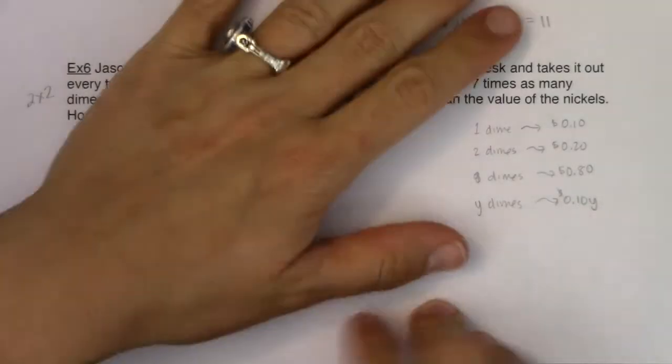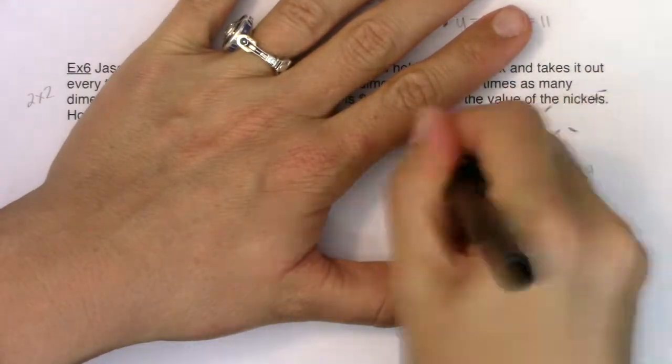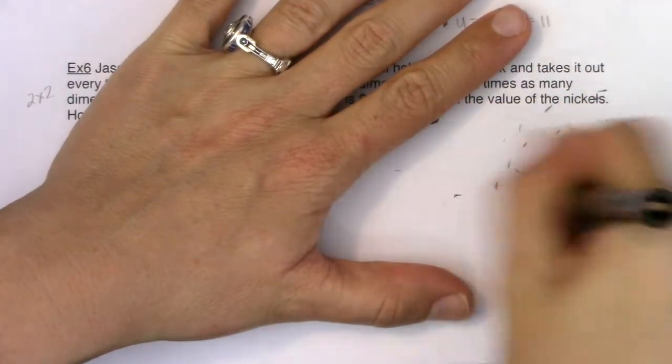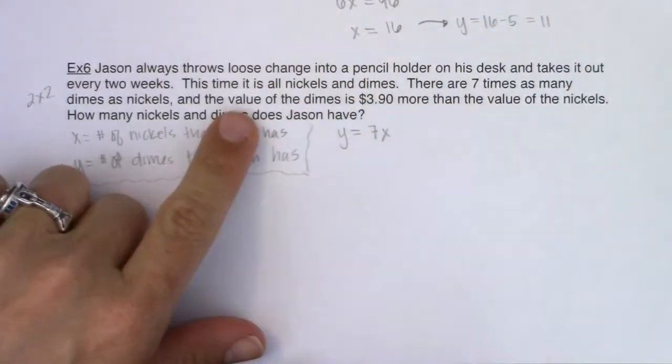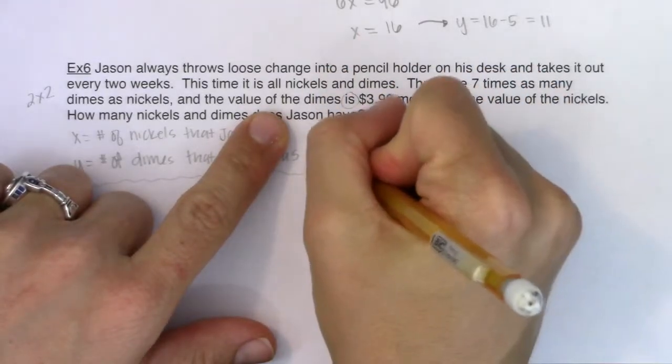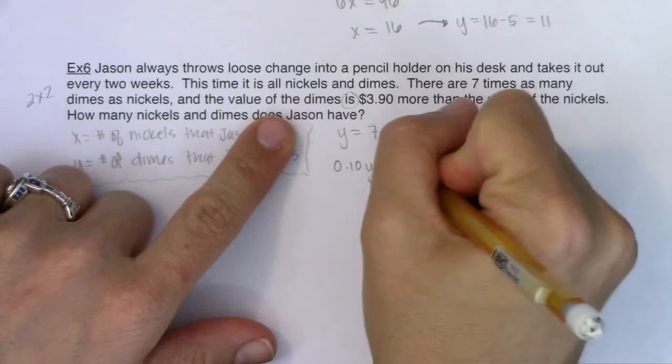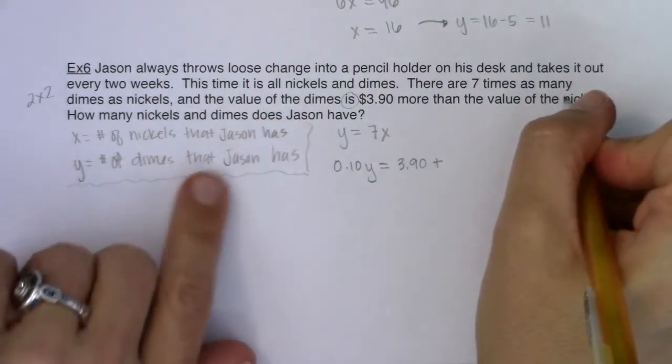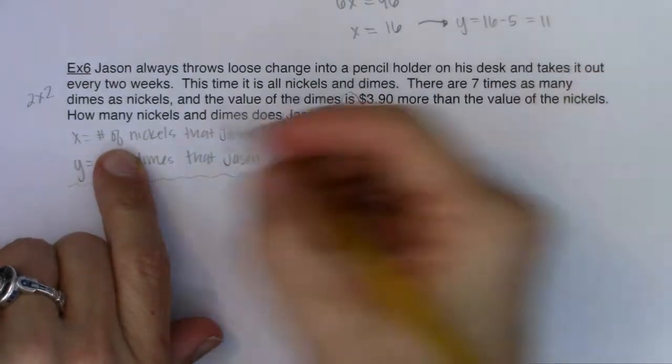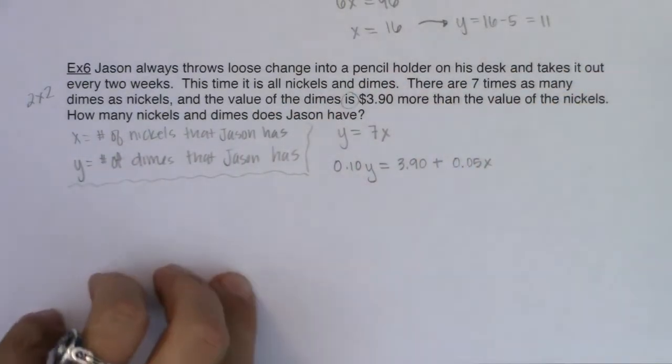So remember this expression, 0.10 times Y. So it says the value of the dimes is 0.10Y is 3.90 more, so $3.90 plus the value of the nickels. Well, the value of your nickels, if you have X of them, they're 0.05 times X.